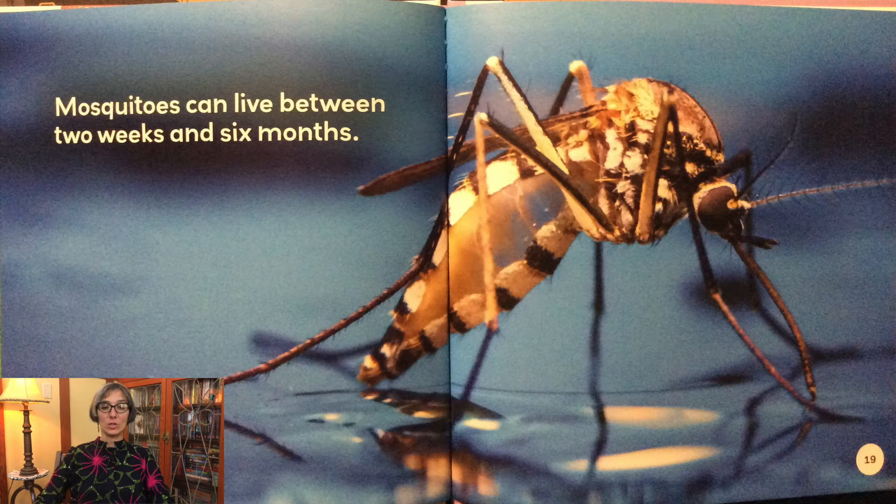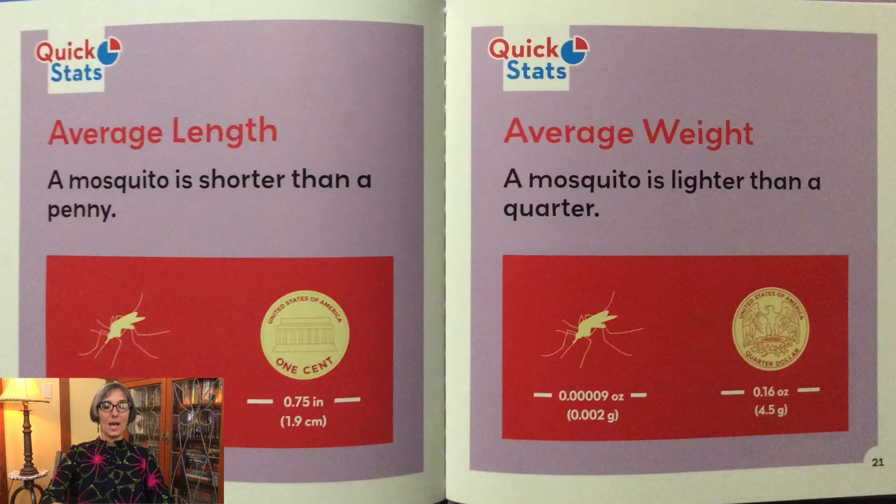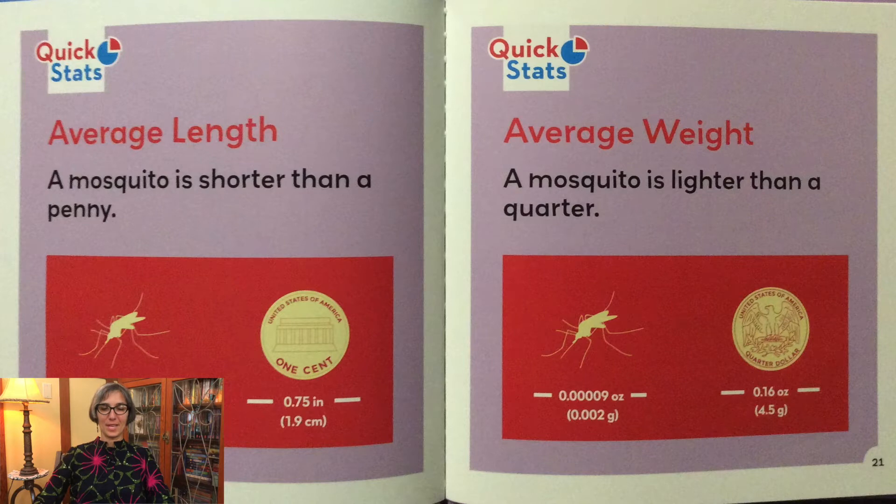Mosquitoes can live between two weeks and six months. A mosquito is shorter than a penny and lighter than a quarter.